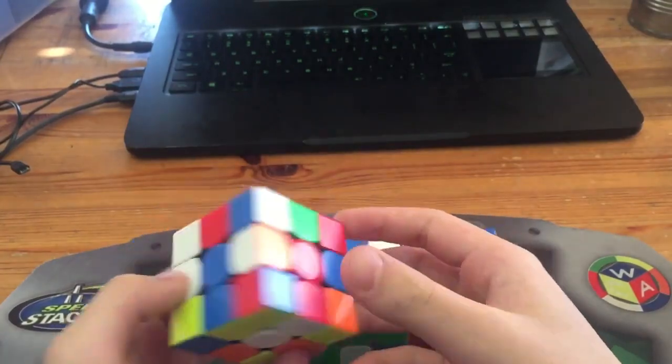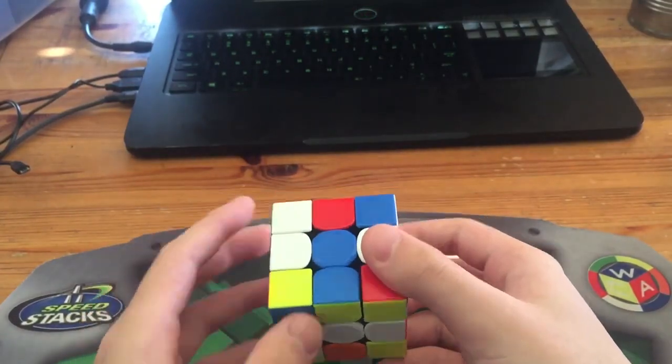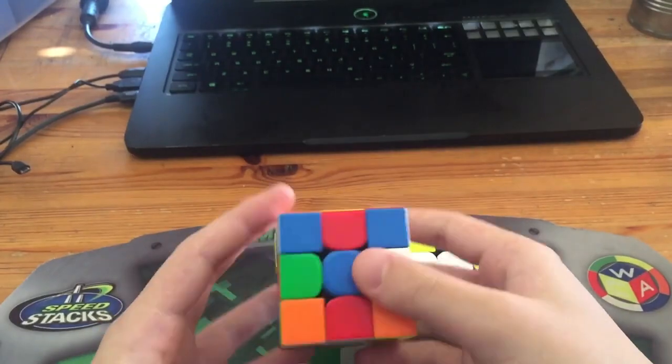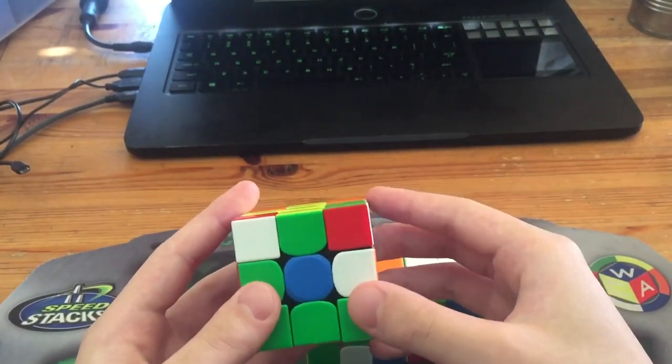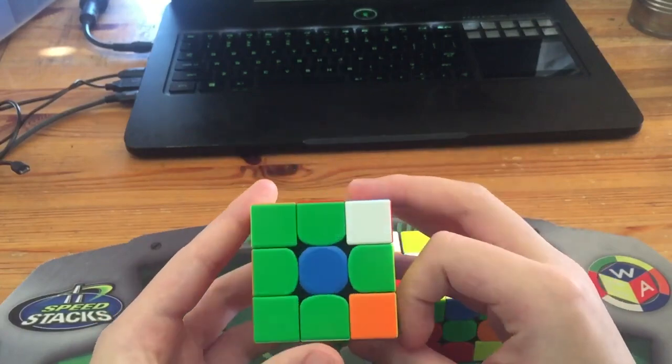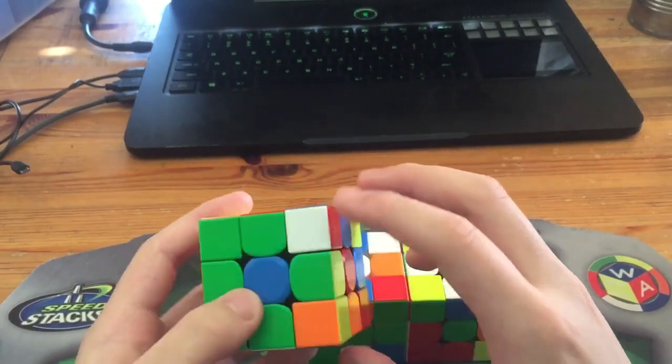I will insert blue like that, and then D' U at the same time. Insert green and orange like that, and first pair.